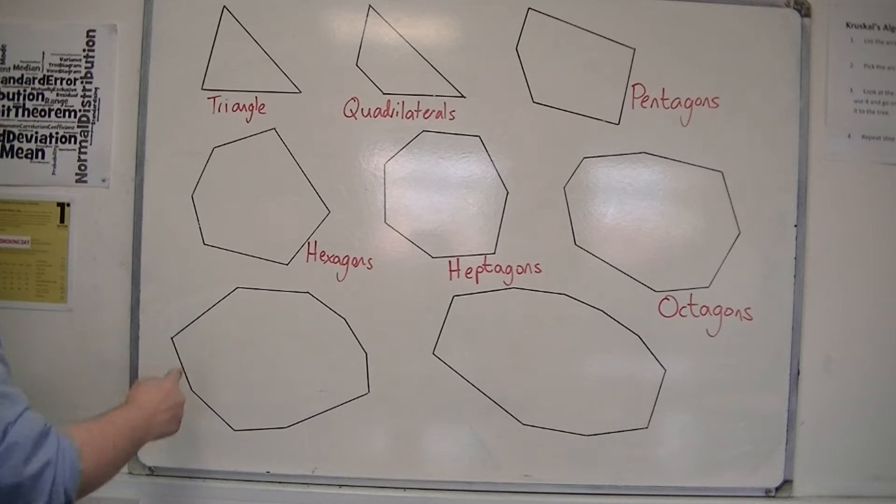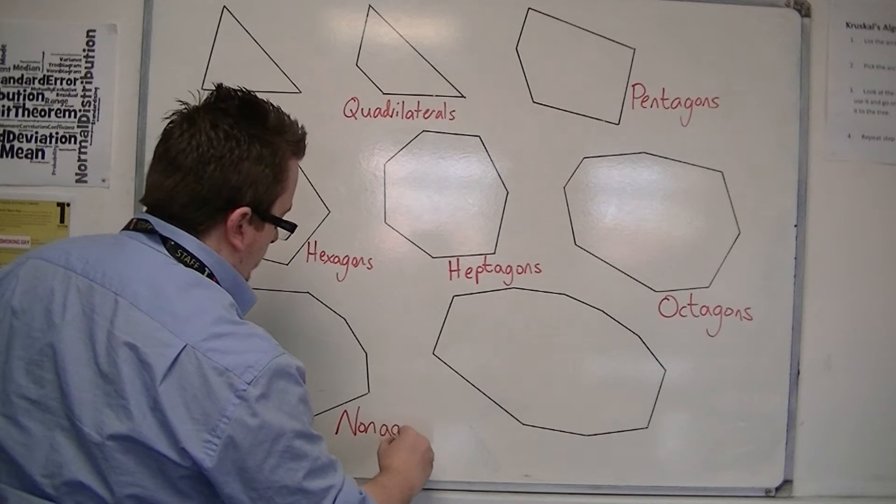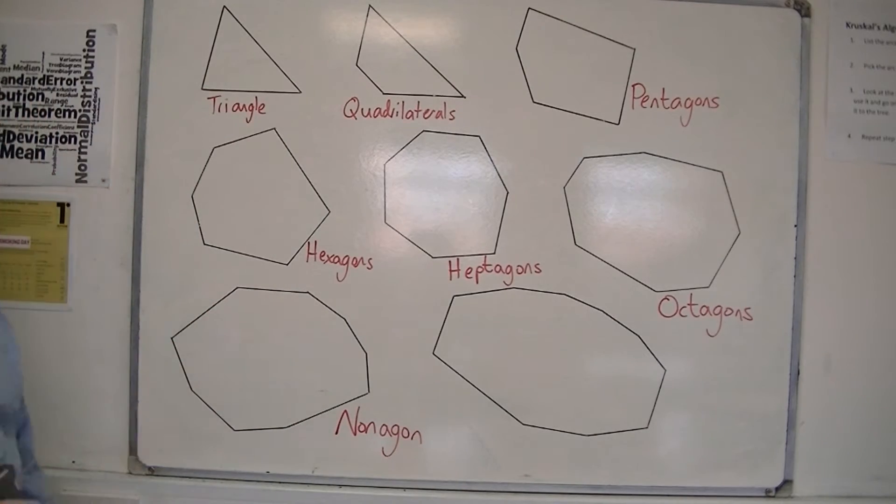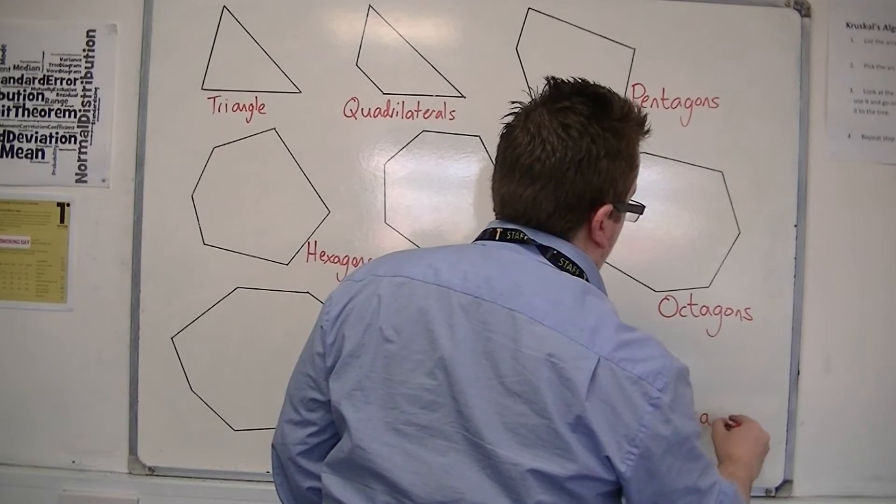And then you've got the nine-sided shape, known as a nonagon. And finally the ten-sided shape, known as a decagon. Decimal, ten.